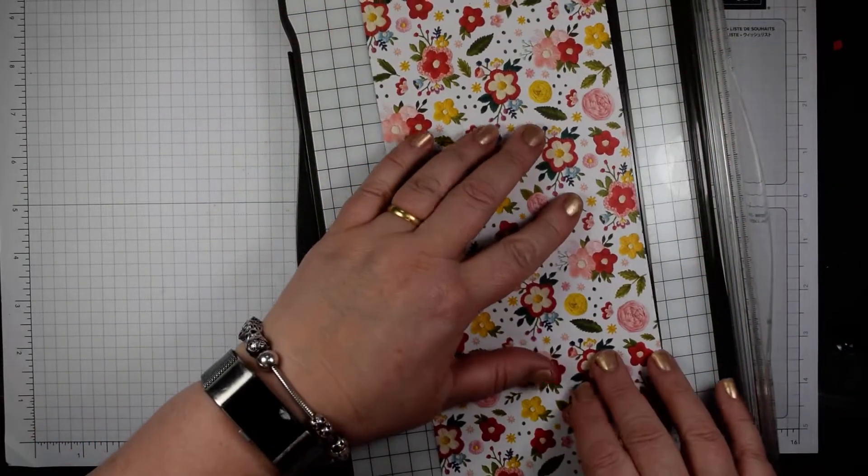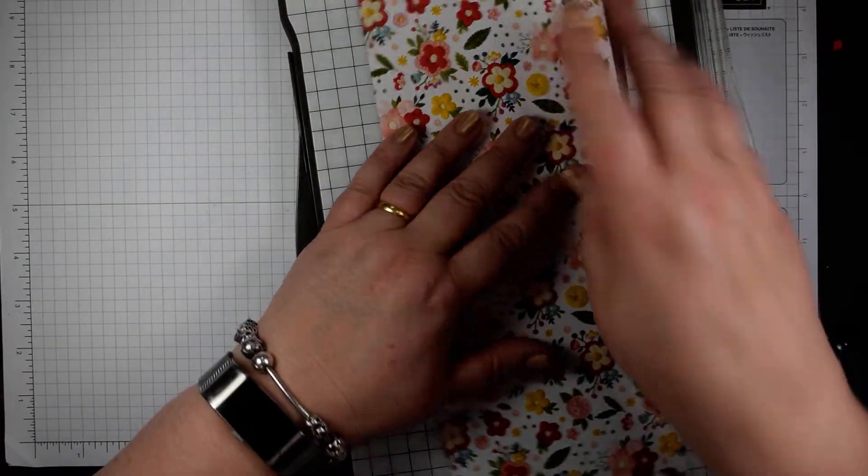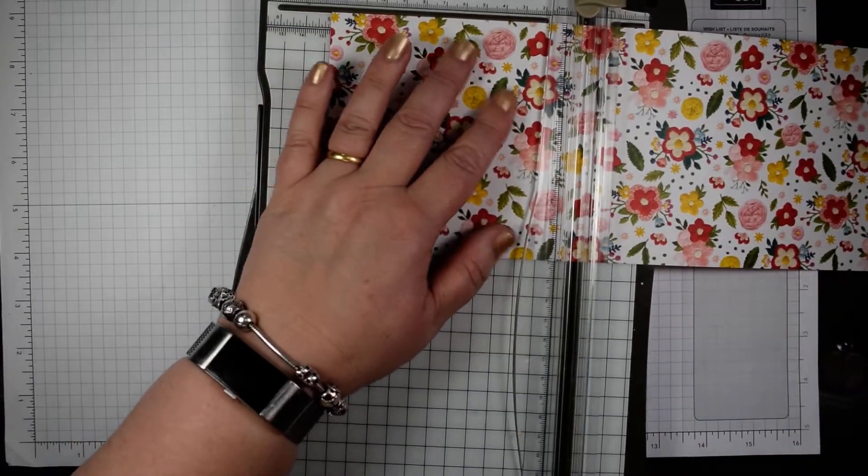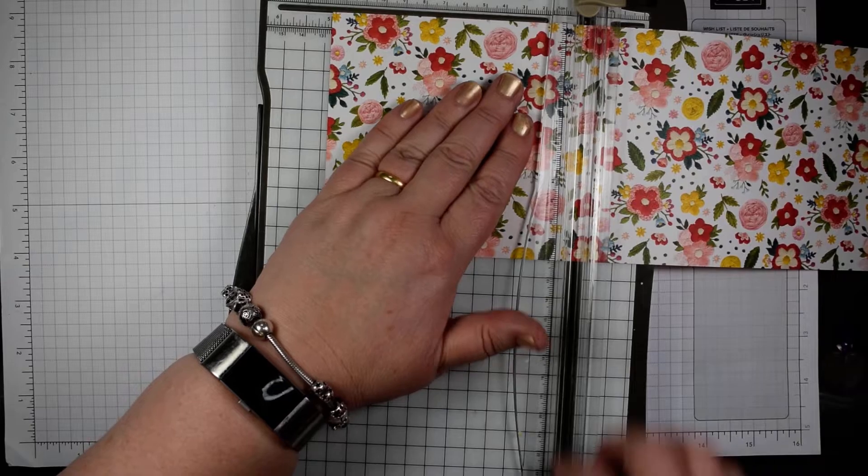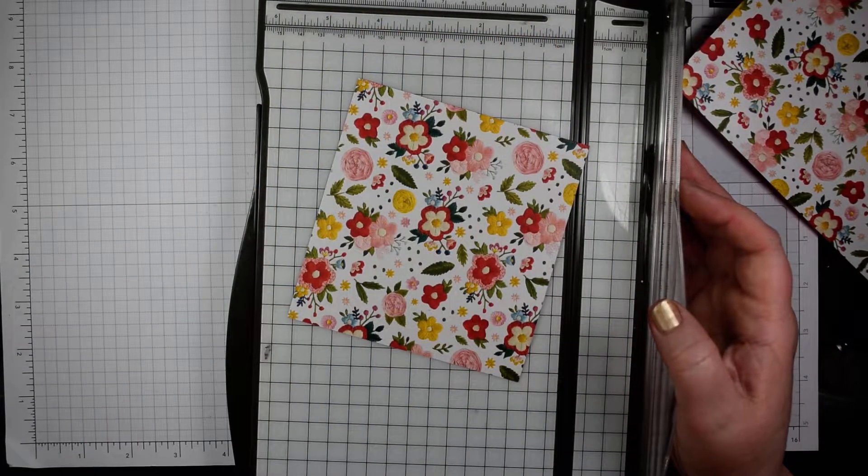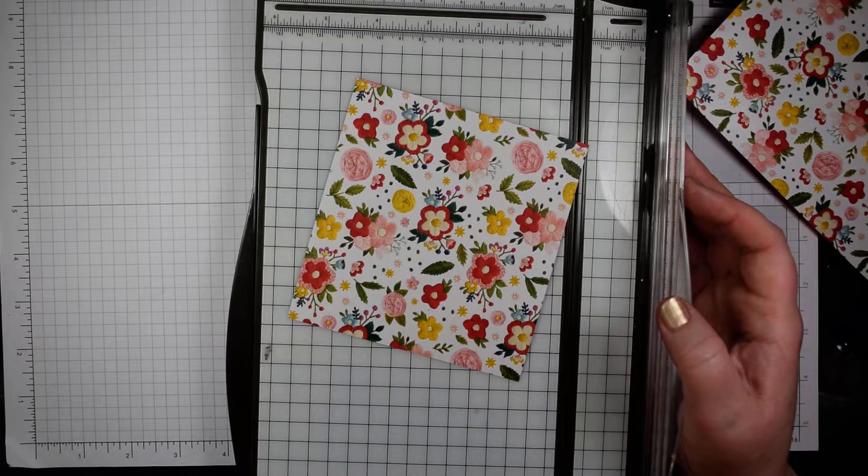This is already pre-cut at five inches... no it isn't, I'm lying. Okay, so it doesn't cut at five inches, so I'm going to cut a piece at five inches and then I'm going to cut again at one and a quarter inches.